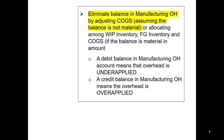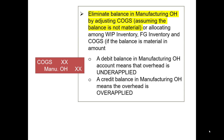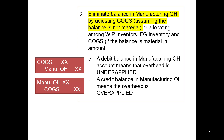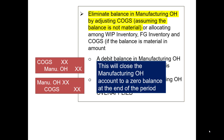Let's look at the specifics of the journal entry to close these amounts to cost of goods sold. If it is under-applied and you have a debit balance, you will debit cost of goods sold and credit manufacturing overhead to get that account to zero. If you have a credit balance and it's over-applied, you will debit manufacturing overhead to get it to a zero balance and credit cost of goods sold. The effect of these entries is to get the manufacturing overhead account to zero before you prepare financial statements.